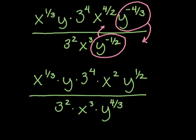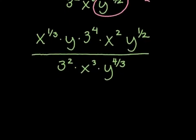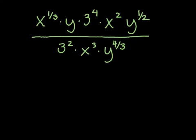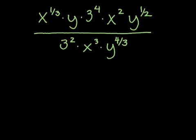Now all of the exponents are nice and positive, which means we can start combining things together so that variables and numbers show up less often. What we want to do next is rearrange so that similar things are together.